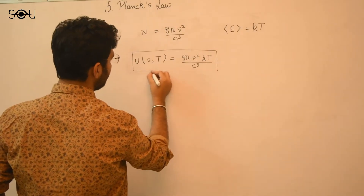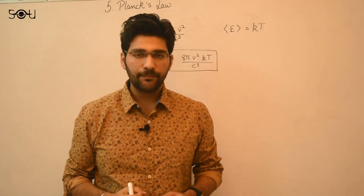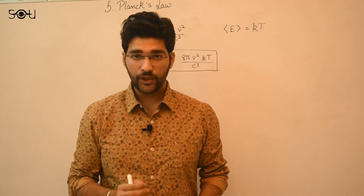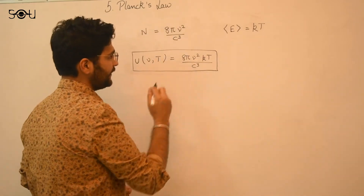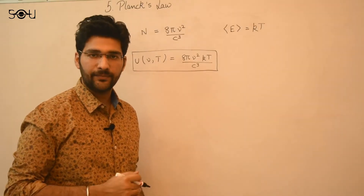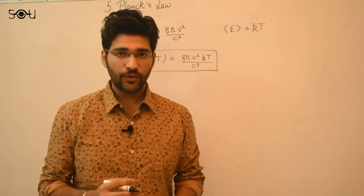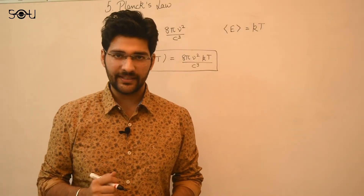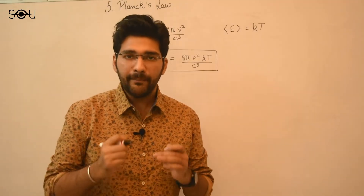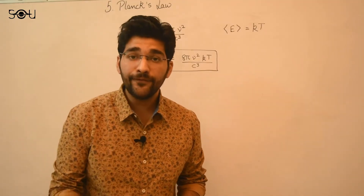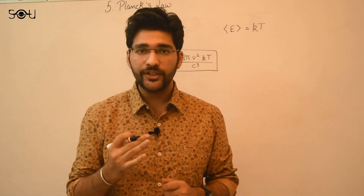Rayleigh and Jeans came up with this formula for the energy density of blackbody radiation. But if you look at this formula, you'll see it's a disaster. When you integrate it over the entire electromagnetic spectrum — that is, over the entire frequency range — this integral diverges. This means that at higher frequencies, say in the UV region and beyond, the amount of energy emitted by a blackbody is infinite, which is an absurd result also known as the ultraviolet catastrophe.